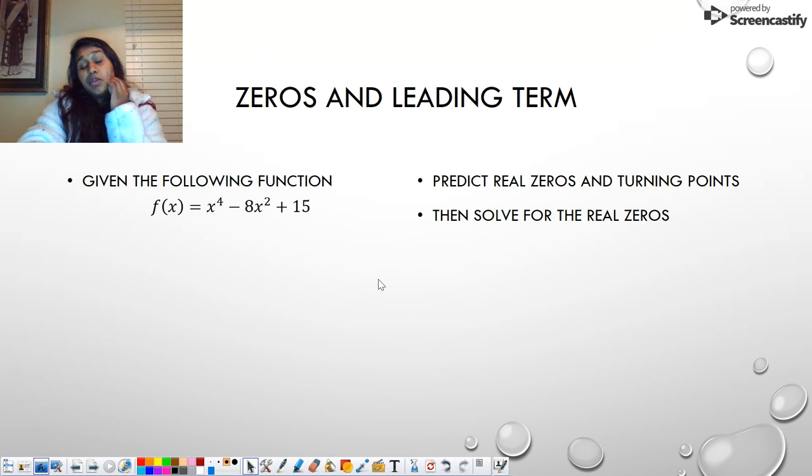Here's one more example for you. Again, I hope you're pausing to do these examples. So our N value is four. We have a possible four real zeros. We have a possible three turning points.